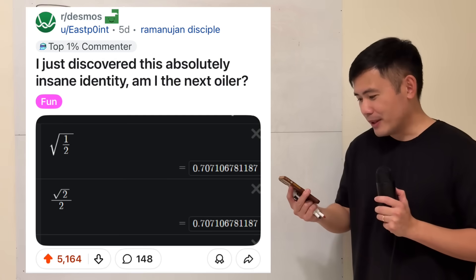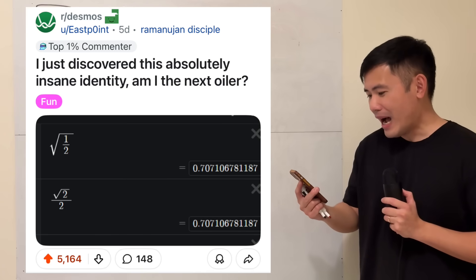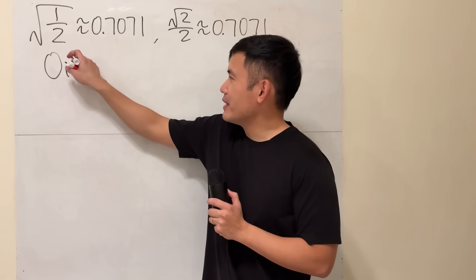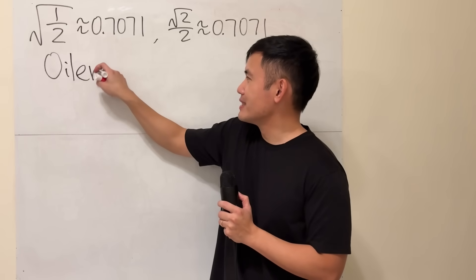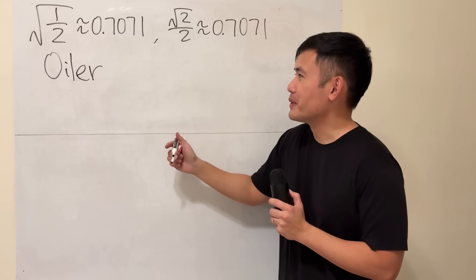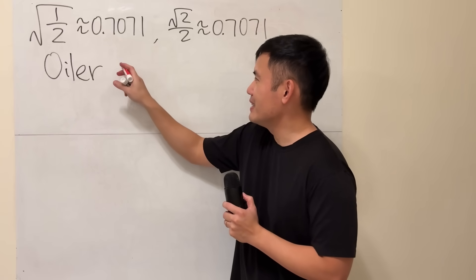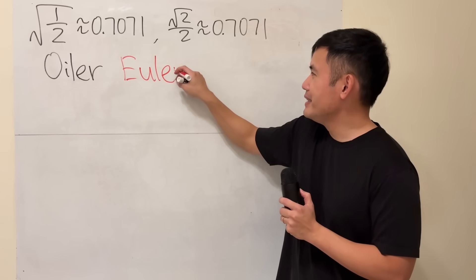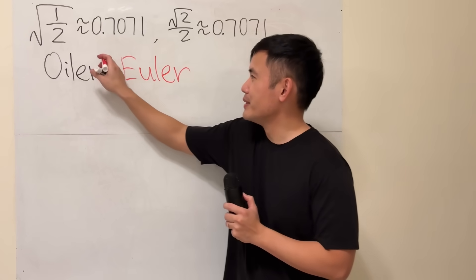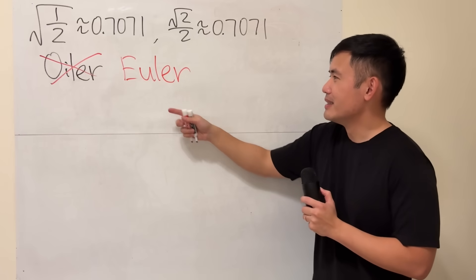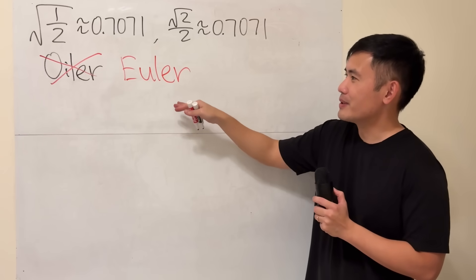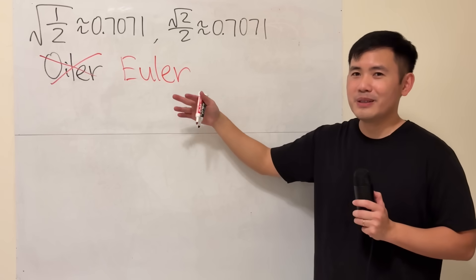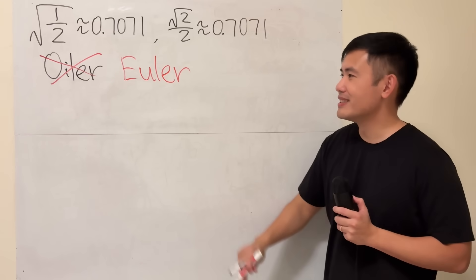Firstly, it's not spelled as O-I-L-E-R. I know you will just say it as Euler, but what you really want to say is E-U-L-E-R. That's how you really spell Euler. It does look like Euler, but you say it as O-I-L-E-R. But anyways.